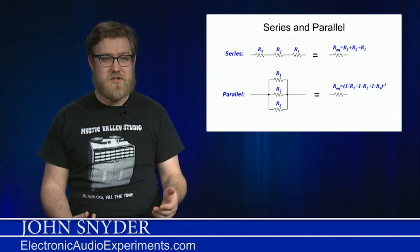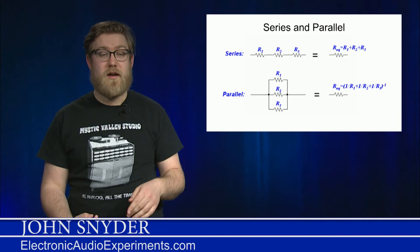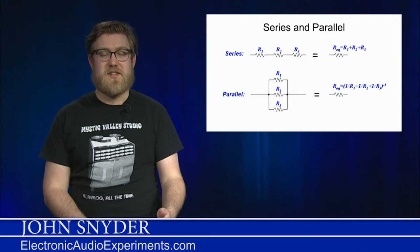You can also have a parallel connection. The way to identify a parallel connection is if current can take more than one path. As you can see, if you're coming in from the left side, the current can go through R1, R2, or R3, and is shared between the three of them in some way, shape, or form. The actual resistance of this network is a little bit more complicated, but you can see the equation here.